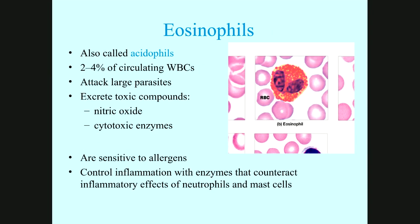Eosinophils — also called acidophils — have granulated cytoplasm and represent two to four percent of the circulating white blood cells. They extract toxic compounds such as nitric oxide and cytotoxic enzymes. They attack large parasites and control inflammation with enzymes that counteract the inflammatory effects of neutrophils and mast cells.